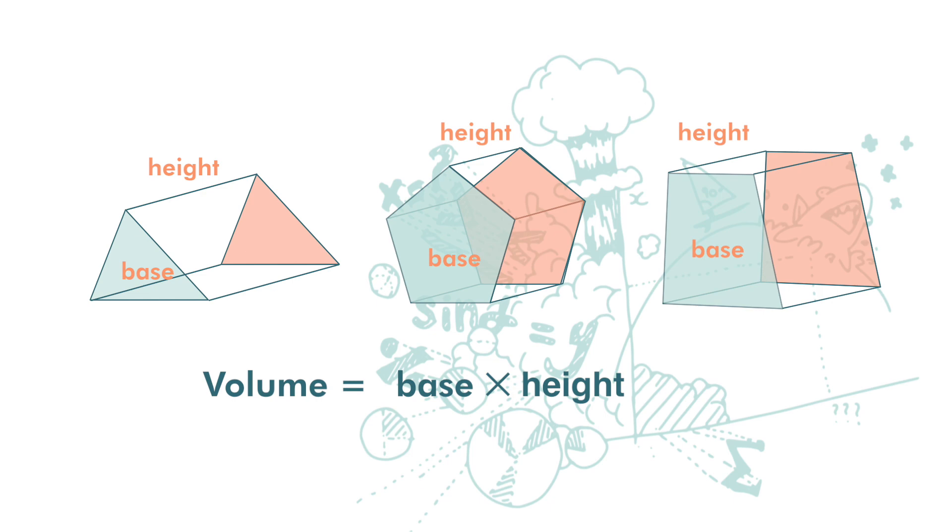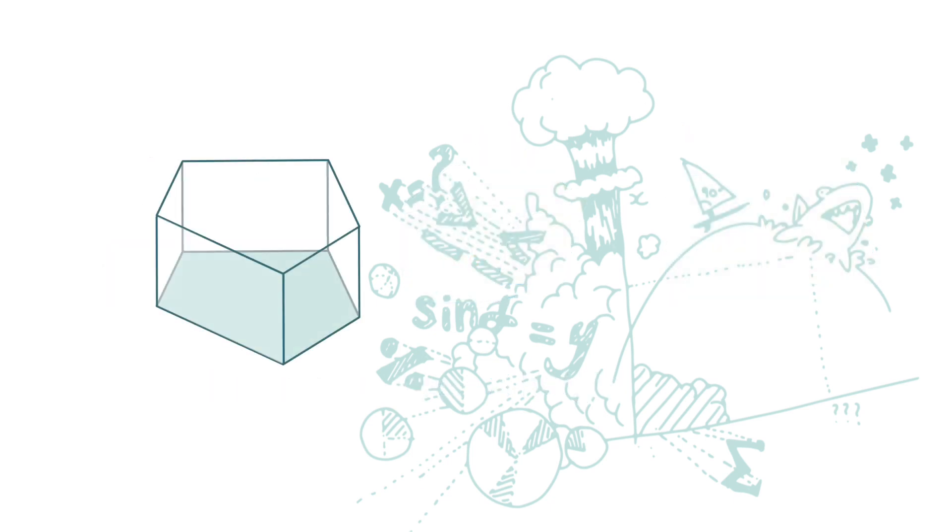Now, if we have such a prism, its base area is 15 centimeters square, and its height is 2 centimeters, and we want to find its volume. The formula for volume is base times height.